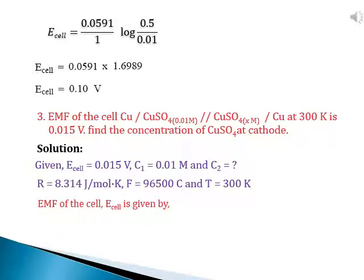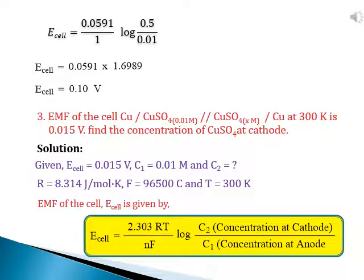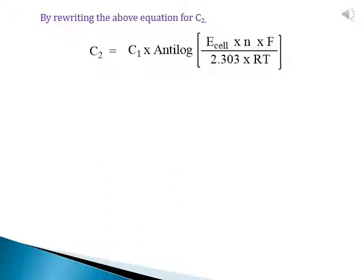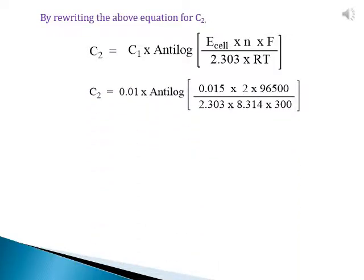The appropriate equation used here is: E_cell = (2.303RT / NF) × log(C2 / C1), where C2 is concentration at cathode and C1 is concentration at anode. Rewriting for C2: C2 = C1 × antilog(E_cell × N × F / (2.303 × R × T)). Substituting: C2 = 0.01 × antilog(0.015 × 2 × 96500 / (2.303 × 8.314 × 300)).